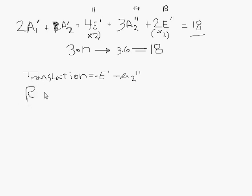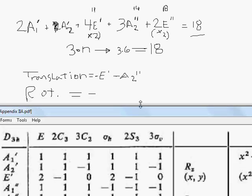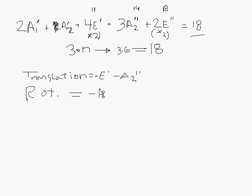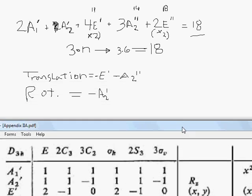And then the rotationals, this time we'll actually do them. We are going to subtract out a2 prime, there's our rz. And then we're going to subtract out the other ones again, e double prime. These will transform together, so you only subtract out once e double prime.